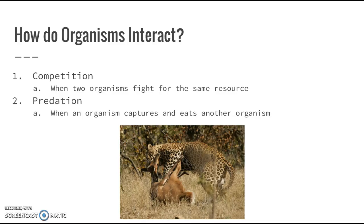So how do organisms interact? They're going to be interacting either through competition or predation, mostly. Competition is when you have two organisms fighting for the same resource — it can be another limiting factor that causes the carrying capacity to be smaller, because if two animals are fighting over the same resource, they can't all get it and survive. A second form of interaction is predation, which is when an organism captures and eats a different organism. You can see the jaguar catching the deer as an example of predation.